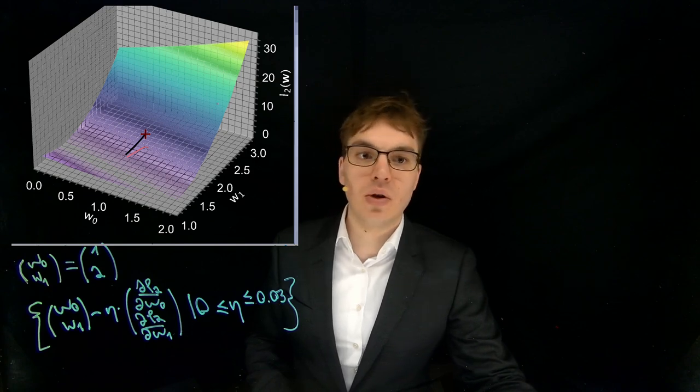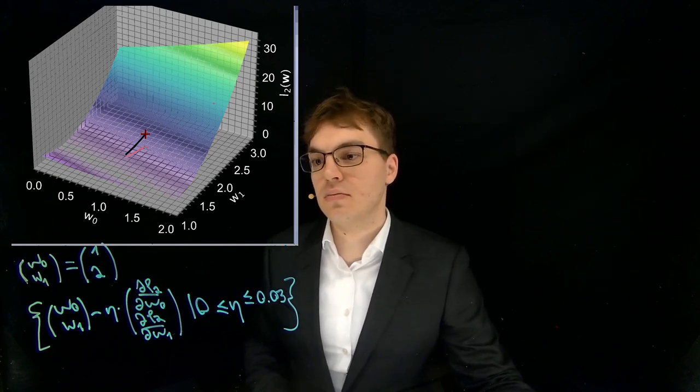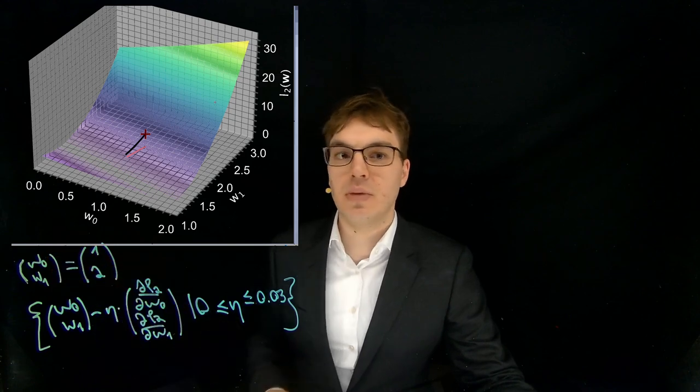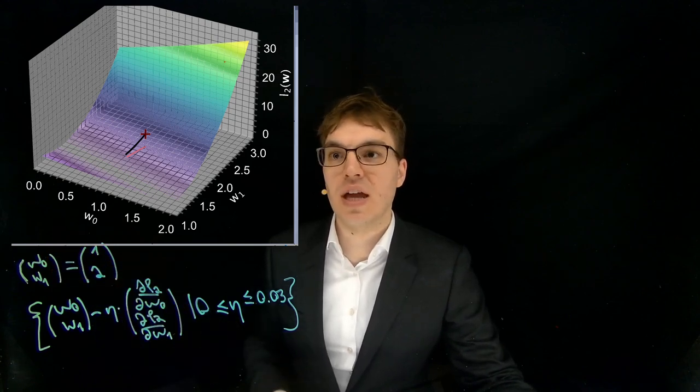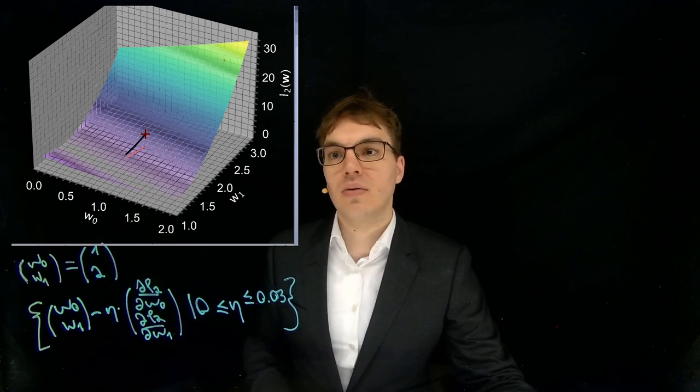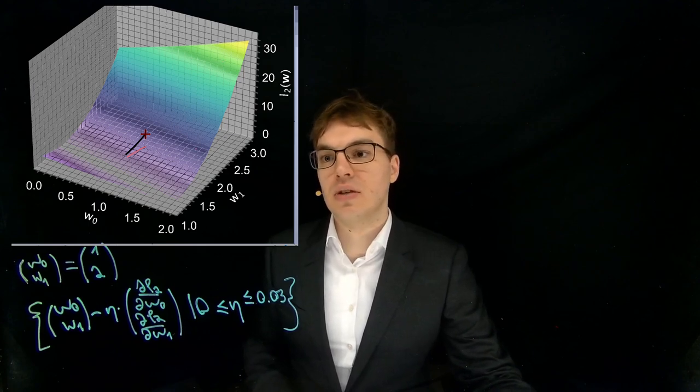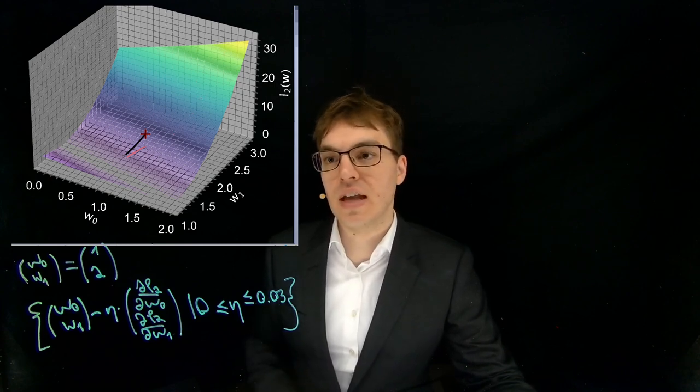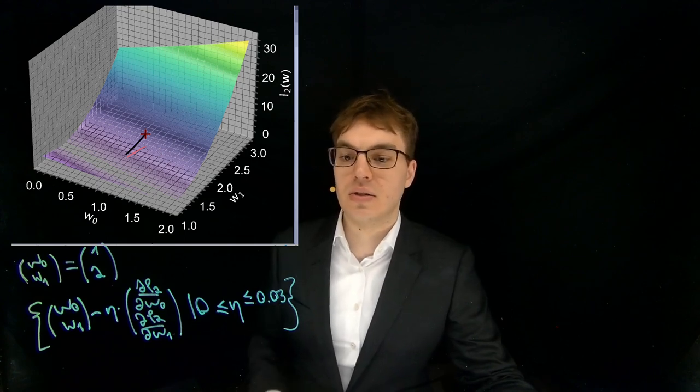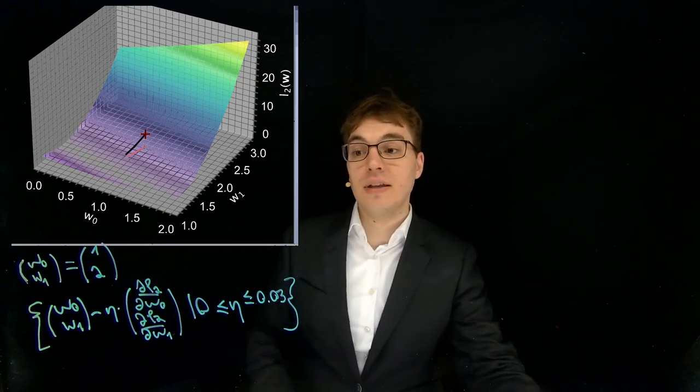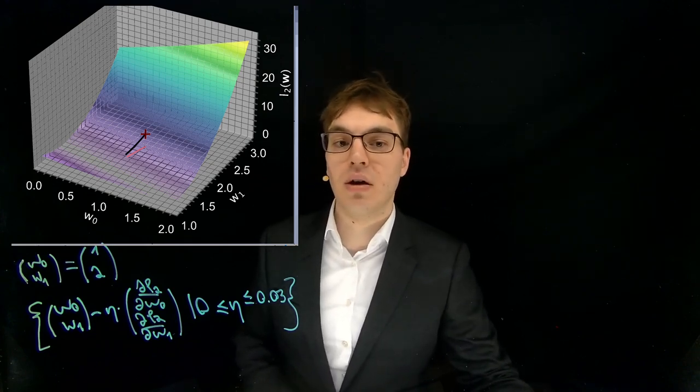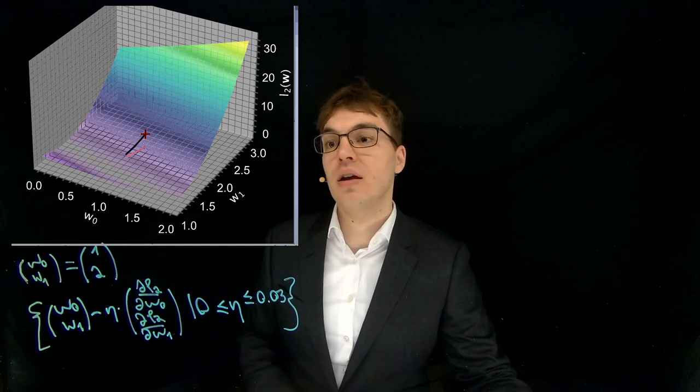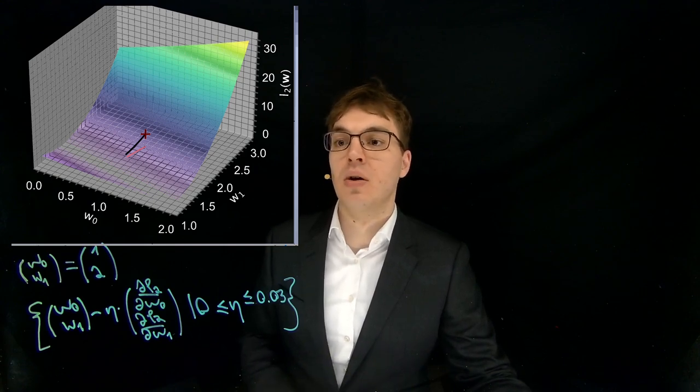And if we were for example to use a different w0, w1 in the beginning, then we would start at a different location. And if we were to use a different eta, then we might actually use a different way or path. But we always go into the direction of the steepest descent and go towards a smaller loss. And going towards a smaller loss means fitting the model better to our given real world data, and this is what we want every time we do machine learning.